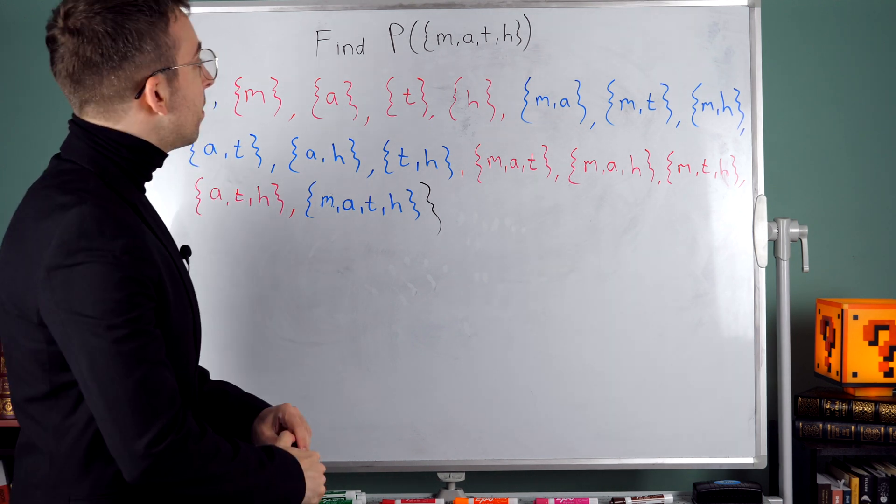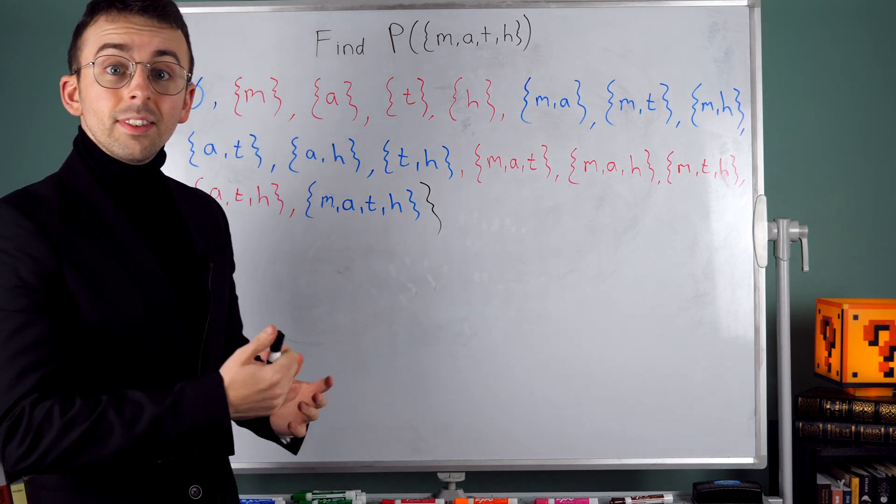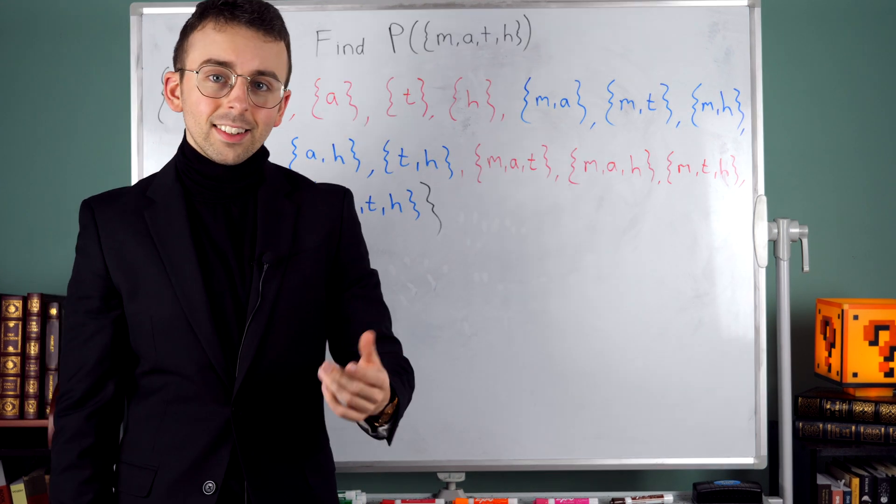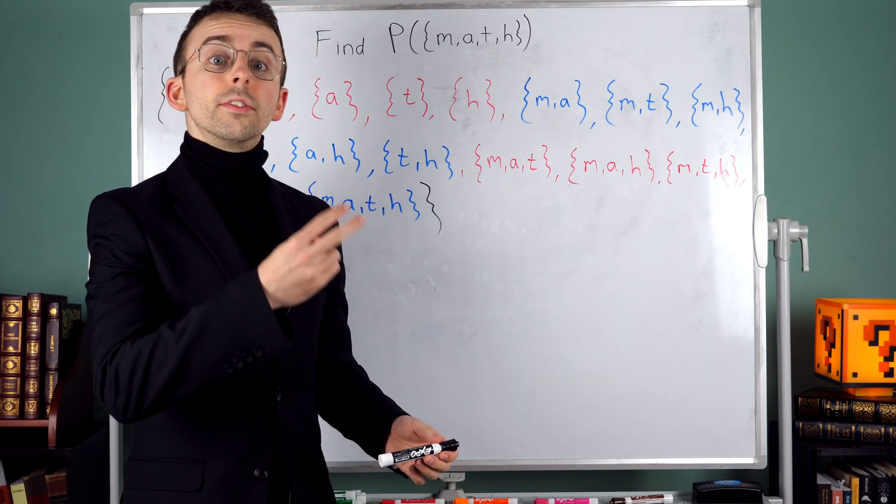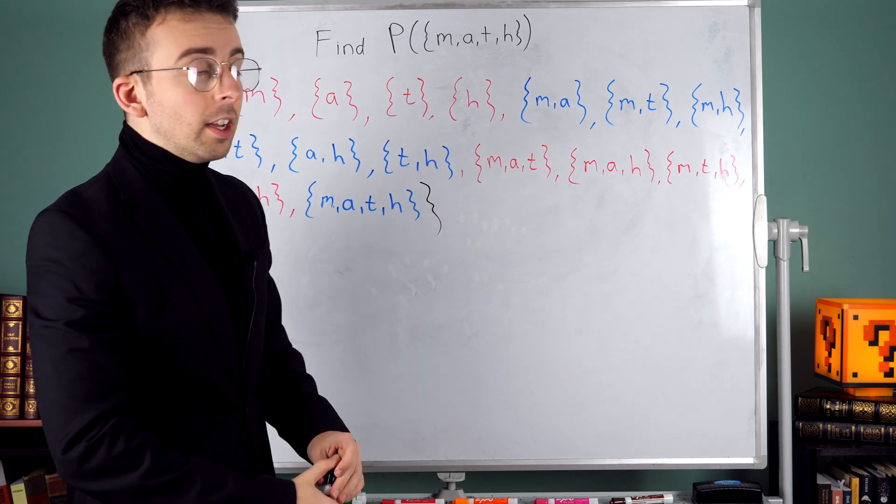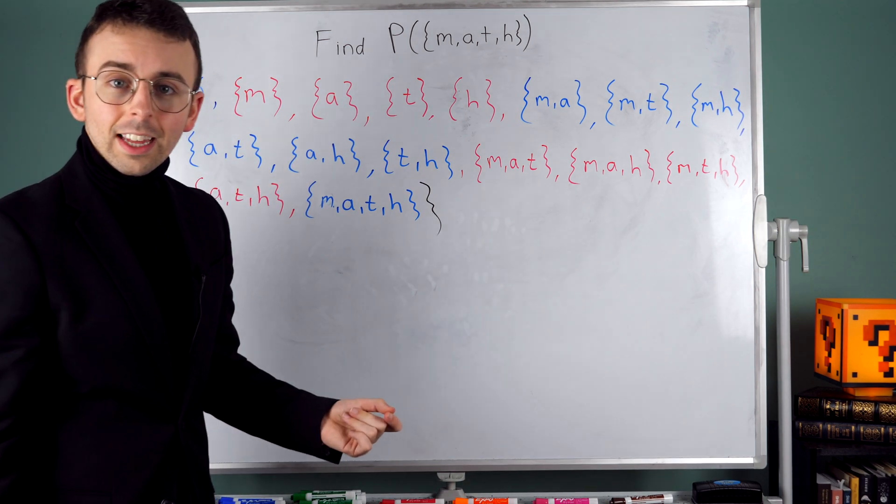Well, originally, like we said, the power set should have 16 elements because this thing has 16 subsets. That was 2 to the power of 4. 4 is its cardinality. So the power set should have 16 elements.